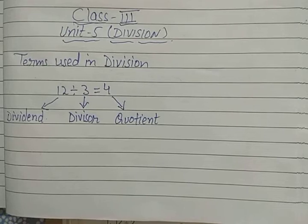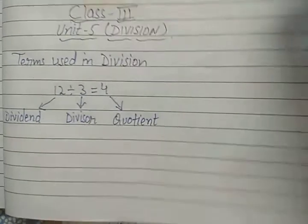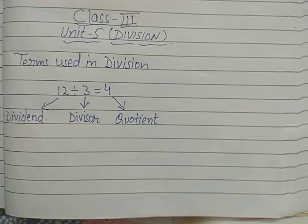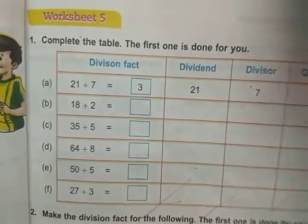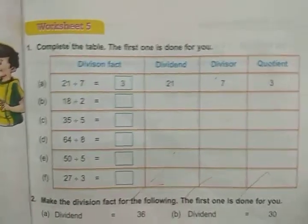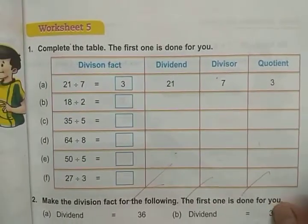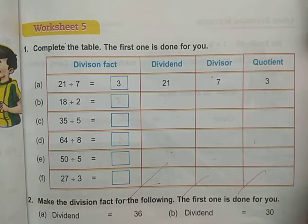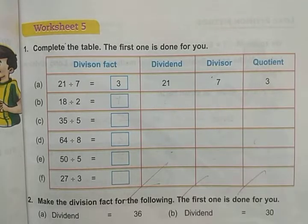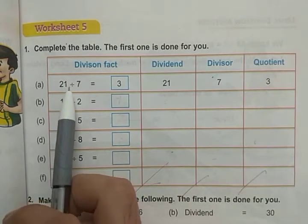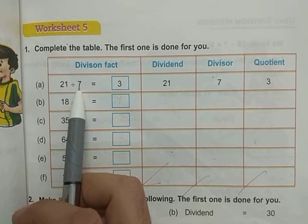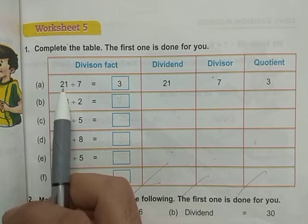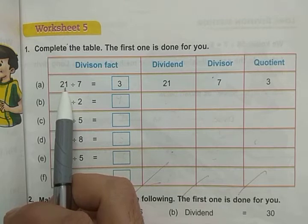Learn these three new words: dividend, divisor, and quotient. Let us do some questions to understand these three terms. We have worksheet number five based on it, and we have to complete the table — the first one is done for you. The first example is 21 divided by 7.